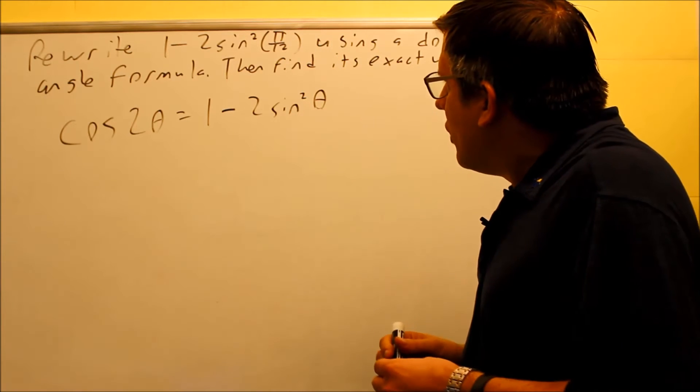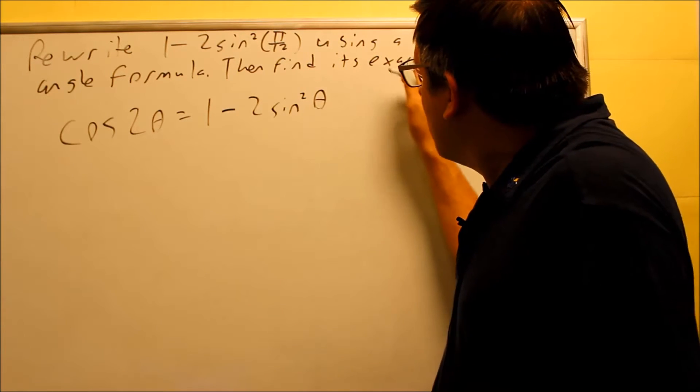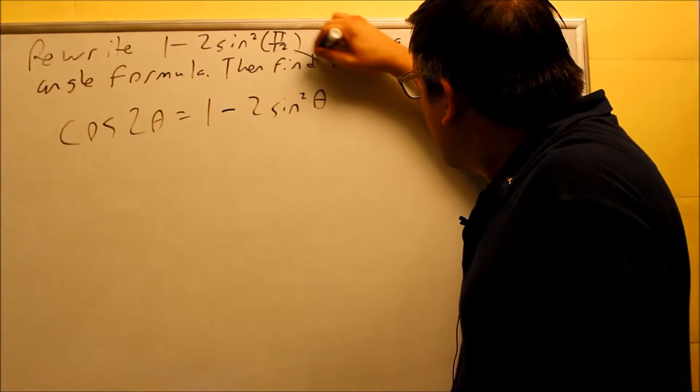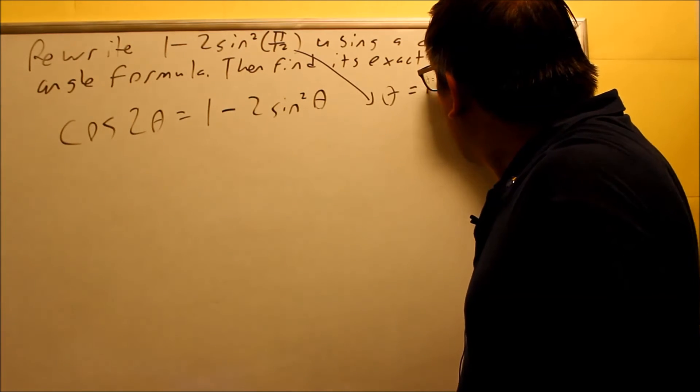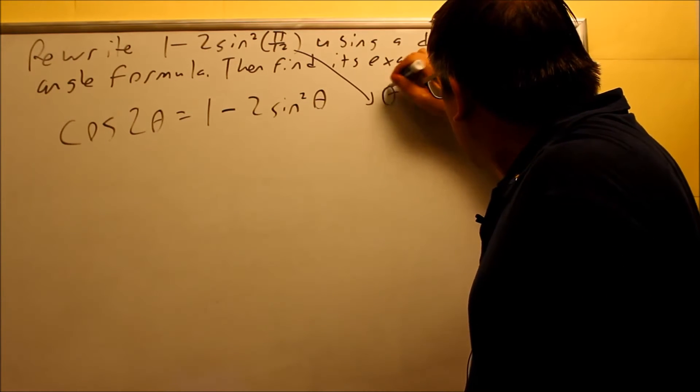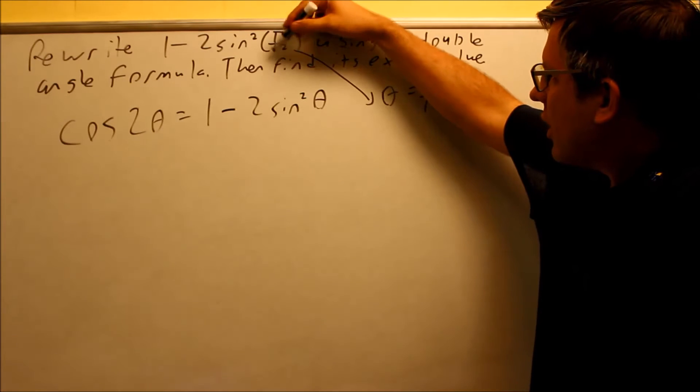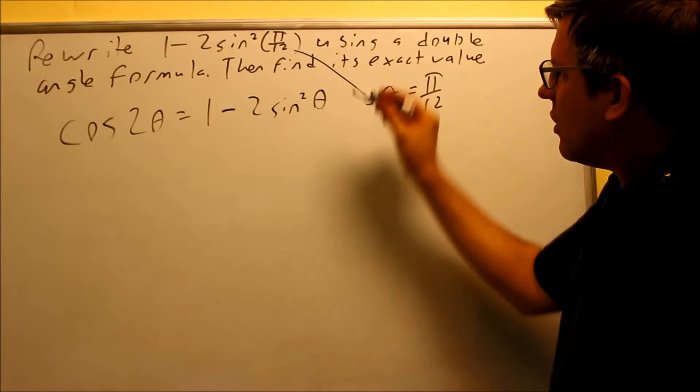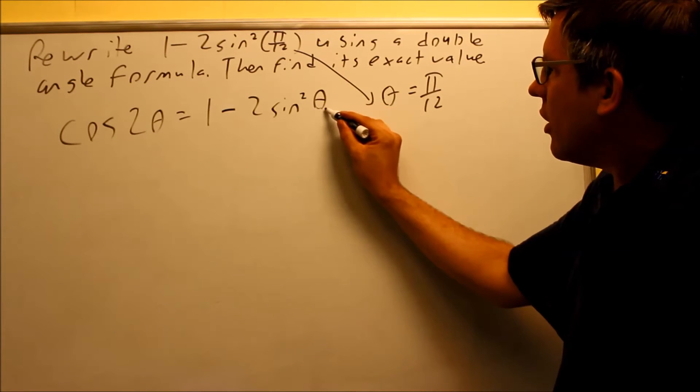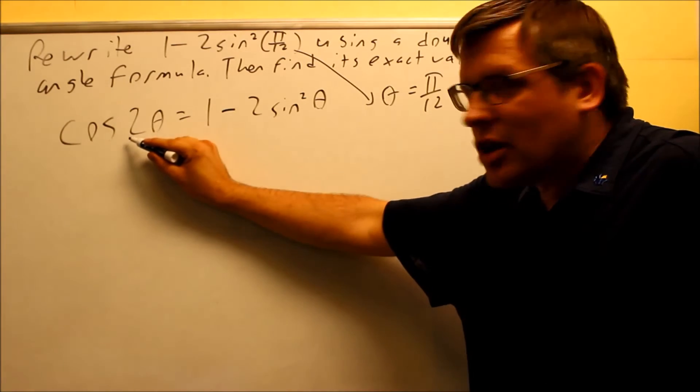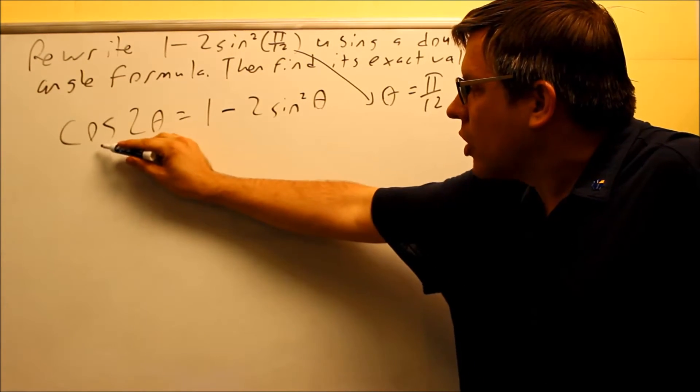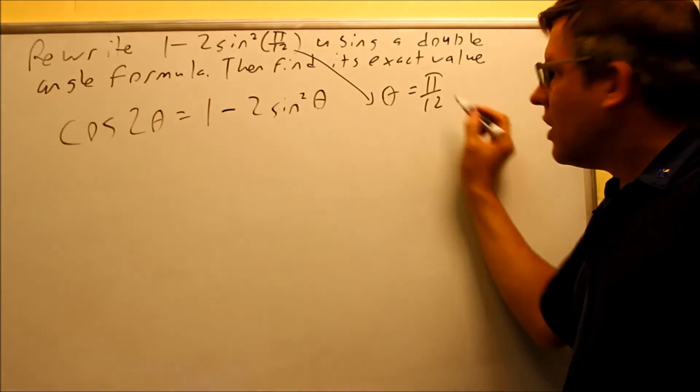So therefore, if I have π over 12 here, that means in this problem we can say that θ equals π over 12. So that's the θ that's inside here that resembles this. So whatever I put here for θ, that means that on the left hand side, when I rewrite it, I'm putting cosine times 2 times θ.